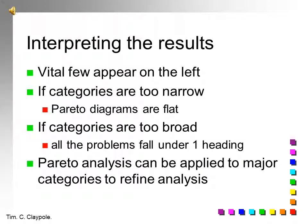So, how do we interpret the results? The vital few appear on the left. That is, the places, the things that are most significant and where you are having most problems. There are issues.